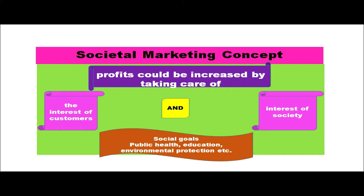Next is the societal marketing concept. Here it is believed that profits could be increased by taking care of the interest of the customers as well as the interest of the society. This is a combination of marketing and concern for the society — we satisfy the customers while also doing something that benefits society. For example, producing environmentally friendly goods, building hospitals, schools, maintaining parks, and supplying good quality products. The interest of customers and the interest of society are both taken into consideration. Social goals like public health, education, and environmental protection come under taking the interest of the society.